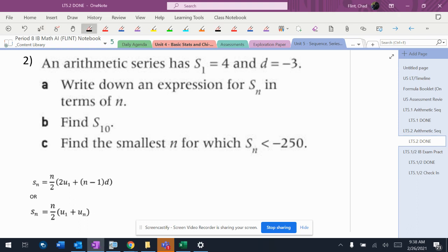It says write an expression for S_n in terms of n. Okay, I've got S_1 is 4, that means that's the first term, and then the difference is negative 3. I don't know U_n, so I can't do this one. I'm not able to do that problem right there.